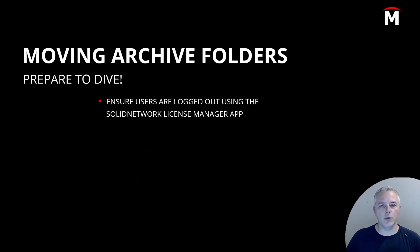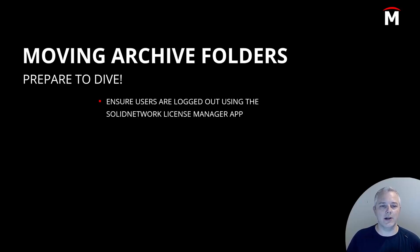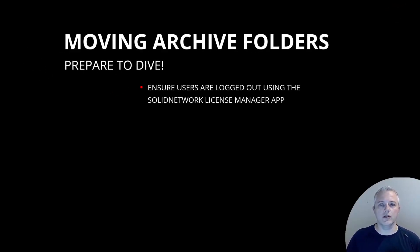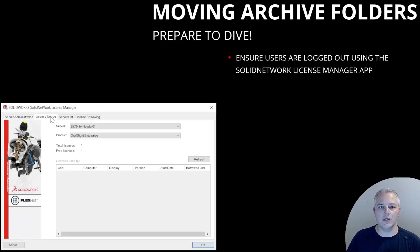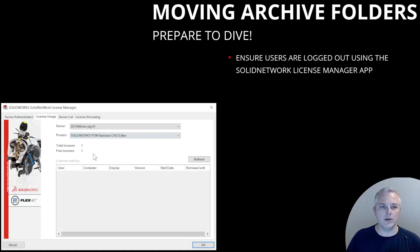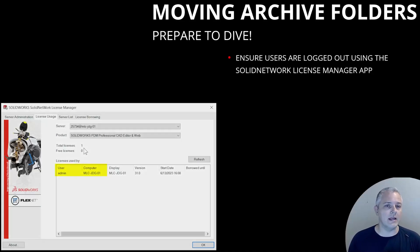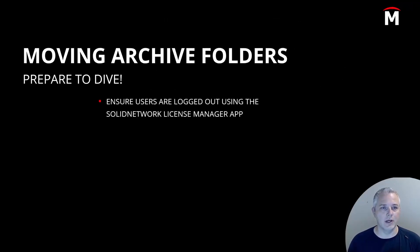Before we jump into the process, we need to make sure all users are logged out of the PDM vault. I suggest planning this in advance so that we can ask all PDM users to check all their documents in and then log out at a specified time. To verify that all users have logged out, we can use the Solid Network License Manager application. Open it, click on the License Usage tab, and in the Product dropdown menu, select each applicable PDM license type one by one, making sure there are none in use. If any licenses are in use, the computer name and username are listed so you can contact those users and ask them to log out. Keep in mind that if users have the option to automatically log in to the PDM vault enabled, you may need them to restart their computer and wait to log on to Windows until after you've disabled logins to the vault.